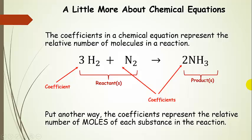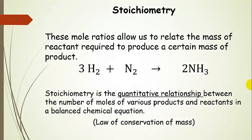Now we're going to talk in terms of mole ratios. These mole ratios help us out a lot — they allow us to relate the mass of reactant required to produce a certain amount of product, and vice versa. We can calculate how much reactant we need to make a desired amount of product. We do this using stoichiometry, which is the quantitative relationship between the number of moles of various products and reactants in a balanced chemical equation, based on the law of conservation of mass.